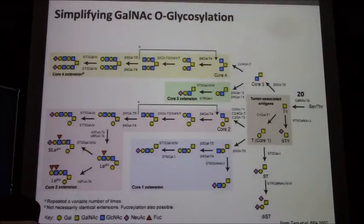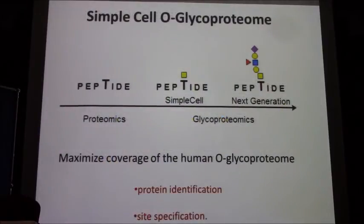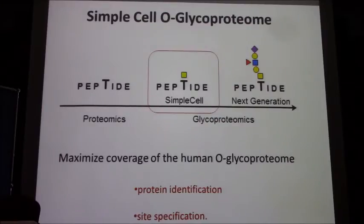How do we handle this analytical task? The overview shows all the potential complexity — it's essentially impossible to analyze everything together. So we decided to simplify the problem and move from what we call next-generation or true glycoproteomics to something called Simple Cell. In this case, we move the challenge to the proteomics field, where many methods are already established and developed.